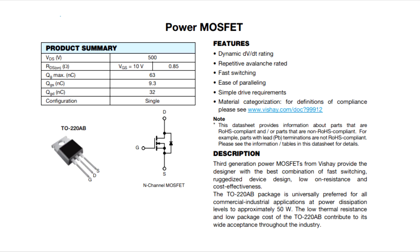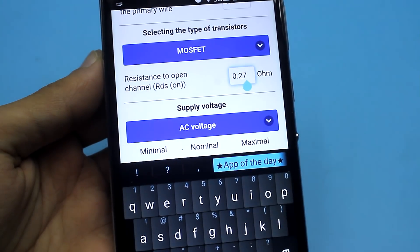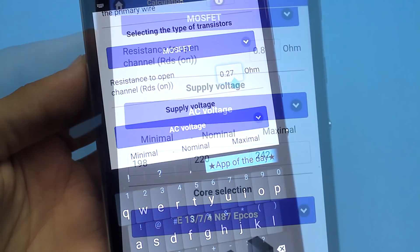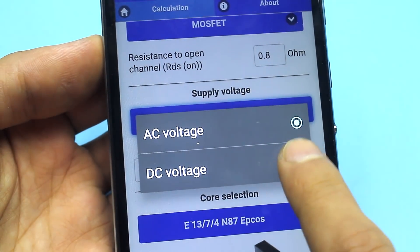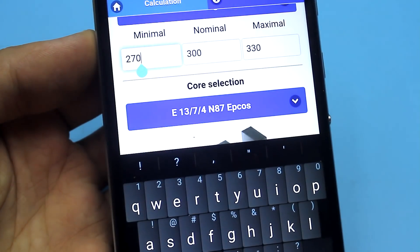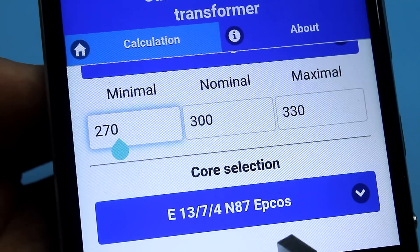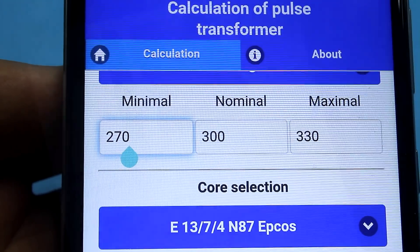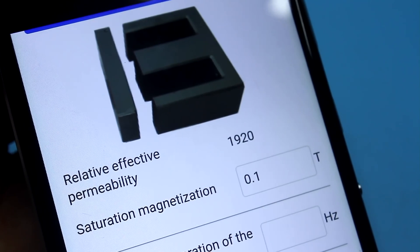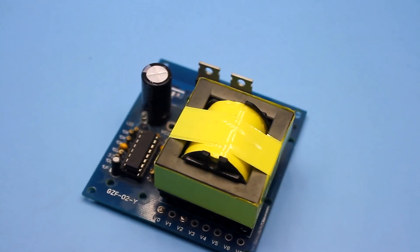For the most accurate calculation, I recommend, in the datasheet of the selected transistor, to look at the value of the resistance of the open channel and insert this parameter into the program. Next, you need to specify the power supply voltage type by selecting one of the two possible. After that, the program automatically selects the minimum, nominal and maximum voltage. But this data can be changed manually. Moreover, the program can do the calculation of the transformer for both converter types, a step down and a step up.